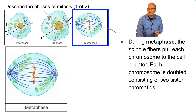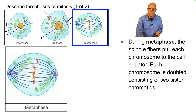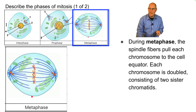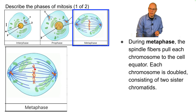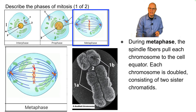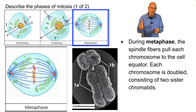During metaphase, the spindle fibers grab onto the chromosomes and pull and push them to the cell equator — imagine a line running from top to bottom. The chromosomes are in an X-like formation because each chromosome is doubled and consists of two clones called sister chromatids.